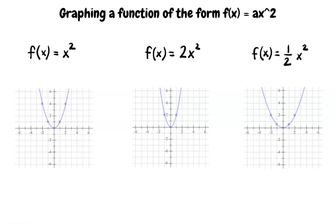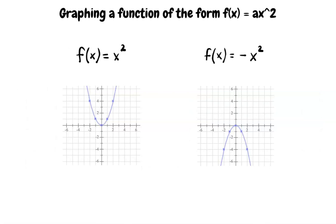What if there is a negative leading coefficient? Good question. When the coefficient of x² is negative, the parabola will open down instead of opening upwards. Now, let's go through an example on how to graph one of these functions.